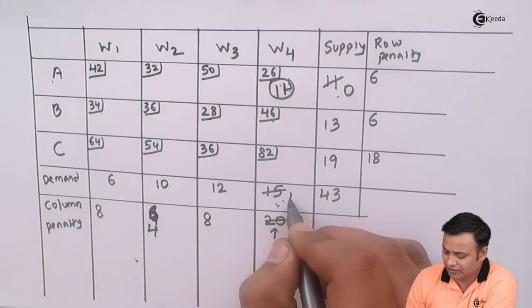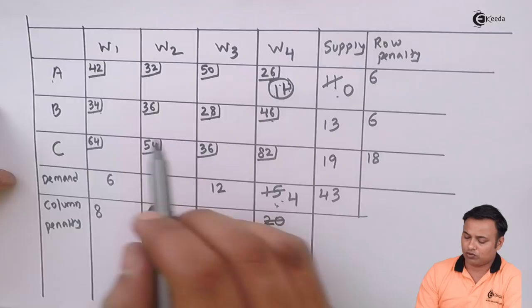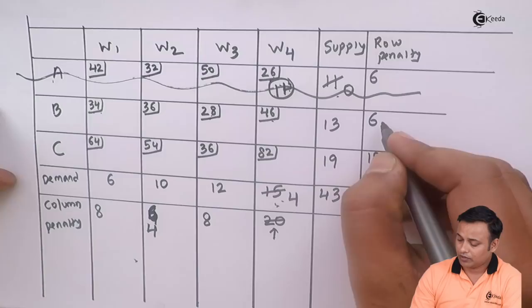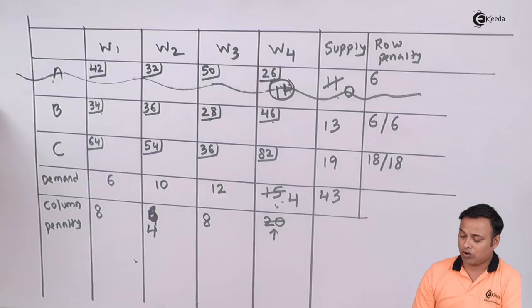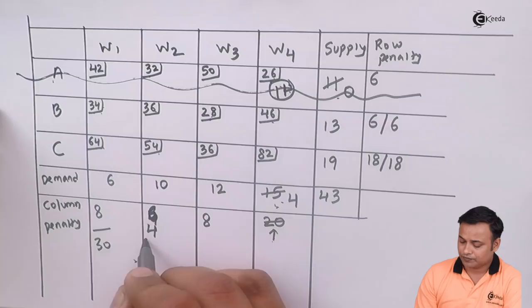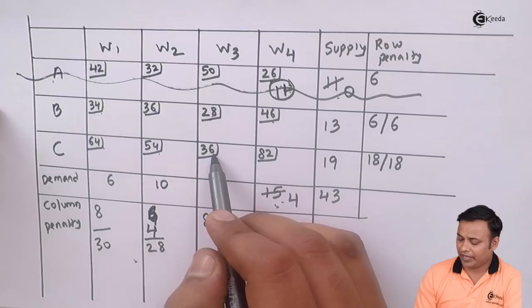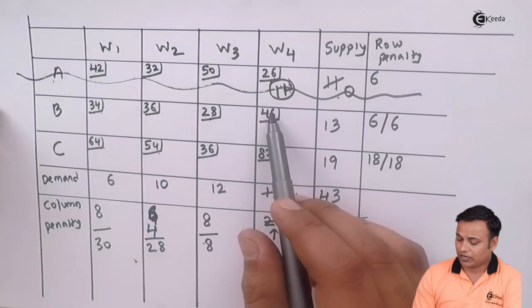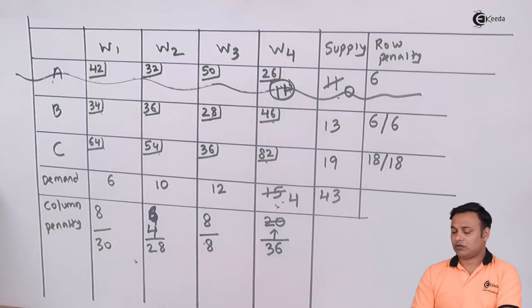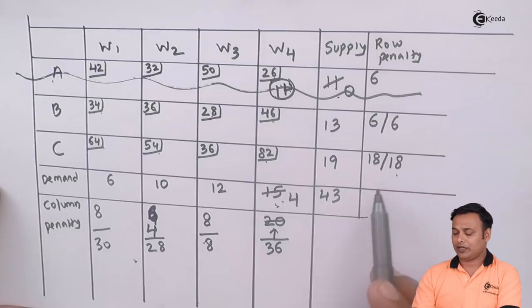Now since we got a 0 in the first row, we will cancel the first row. Because we have cancelled the row, my row penalties will remain same: 6 and 18. And I will work out the column penalties again. My column penalties will be 34 and 64, difference is 30; 36 and 54, difference is 28; 36 and 28, difference is 8; 46 and 82, the difference will be 36.